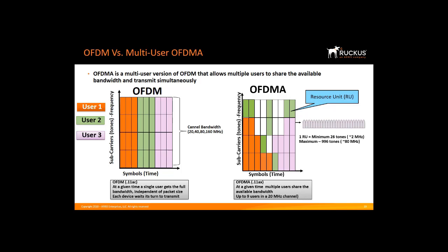An AP can choose to allocate the whole channel — all sub-carriers within a channel, such as a 20 MHz channel — to a single user in a given time frame, or it may partition the whole channel to serve multiple devices simultaneously. This technique improves the usable throughput for all devices connected to an AP. It reduces the use of the contention methodology that preceded 11AX and moves Wi-Fi from a contention-based to a schedule-based service, helping stabilize Wi-Fi performance, especially in higher-density environments such as stadiums, convention centers, transportation hubs, and auditoriums.